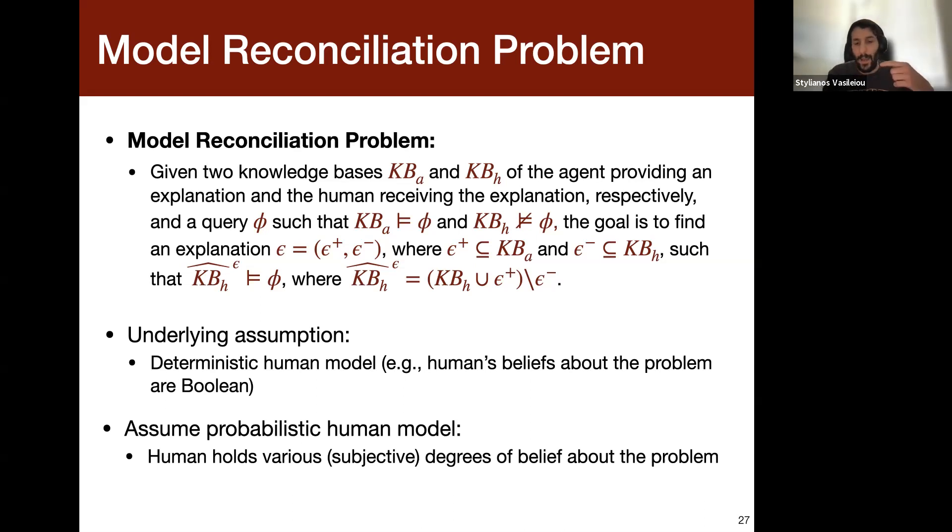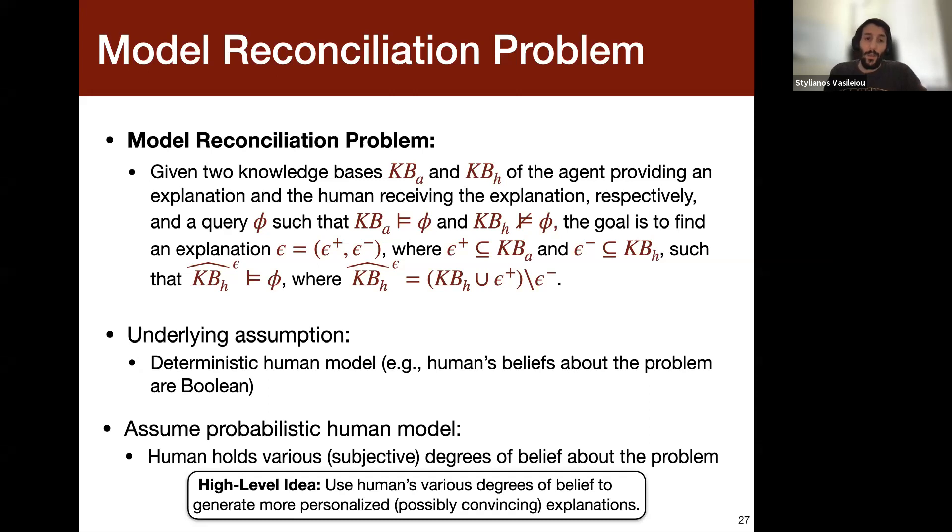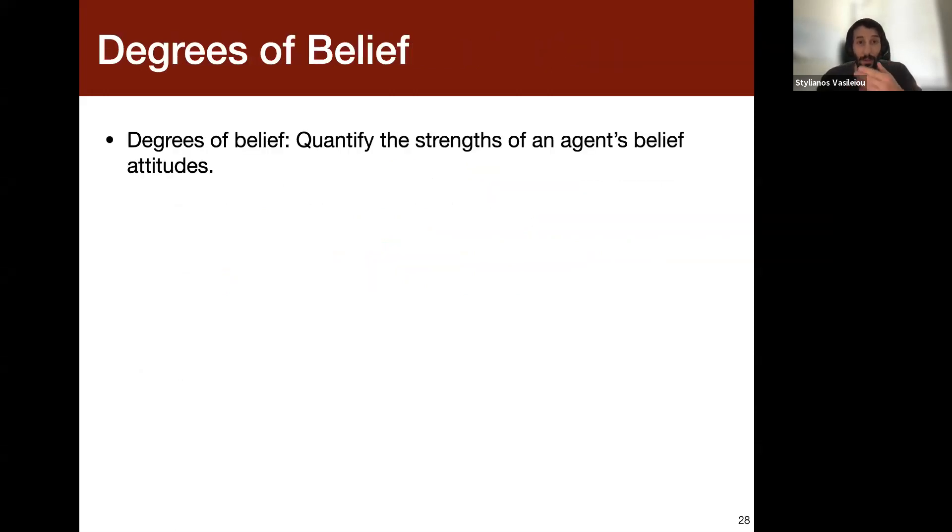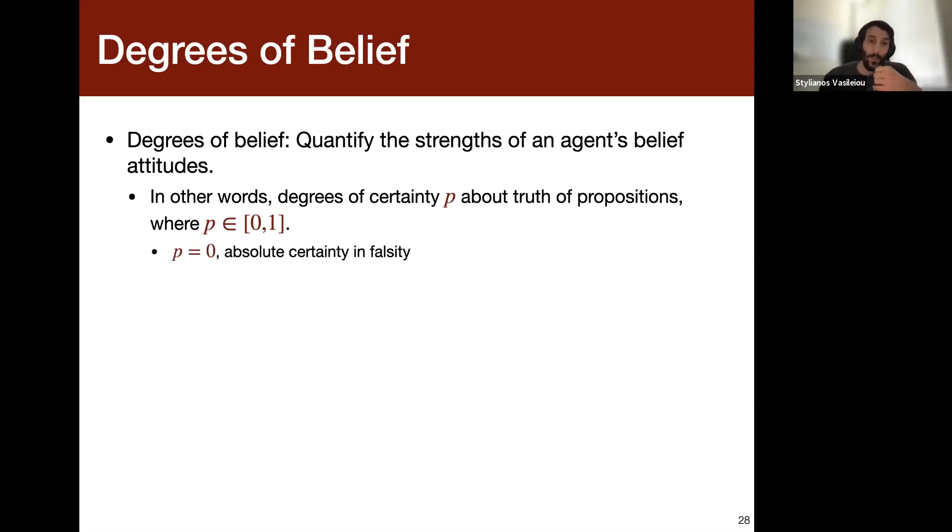So the idea we had in this paper, which we're still investigating, is to assume a probabilistic human model. Basically now the human holds various subjective degrees of belief about the problem. So now it's not binary, it's not Boolean. So the main high level idea here is to use these degrees of belief to generate more personalized and possibly convincing—and I say possibly because we haven't done any user studies to test that yet—to generate more personalized explanations. So what I mean by degrees of belief, specifically, is the ability to basically quantify the strengths of an agent's belief attitudes. So in other words, there are degrees of certainty about the truth of propositions. So basically zero will mean that we are absolutely certain in the falsehood of the proposition, one in the truth, 0.5 just as likely, and so on.